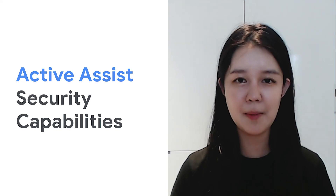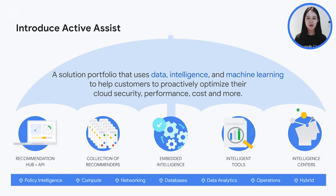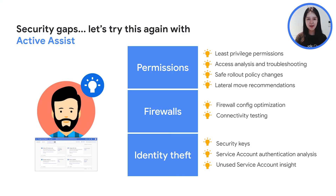Now let's talk about Active Assist security capabilities. Active Assist is not just one thing — it's a portfolio of tools and services that span across Google Cloud. Active Assist combines data, intelligence, and machine learning to provide you with an array of tools specifically tuned to your usage, designed to reduce the complexity of managing infrastructure in the cloud. The Active Assist portfolio includes the recommendation hub and an API, as well as a collection of recommenders. With Active Assist, you can proactively identify security gaps and maintain best practices. You are able to use identity and access management role recommendations to help make your organization more secure by reducing the number of permissions that were overgranted. For the networking layer, Firewall Insights can provide you access to insights, recommendations, and metrics about your firewall rules.